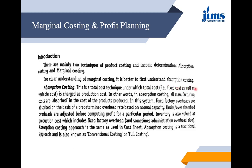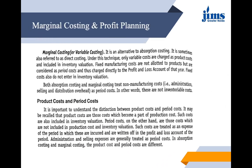Absorption costing is a total cost technique under which total cost — that is, fixed cost as well as variable cost — is charged as production cost. All manufacturing costs are absorbed in the cost of the products produced. Factory fixed overheads are absorbed based on a predetermined overhead rate using normal capacity. Any under- or over-absorbed overheads are adjusted before computing profit. Inventory is valued at production cost including fixed factory overhead and sometimes administration overhead. Absorption costing is a traditional approach, also known as conventional costing or full costing.